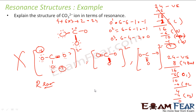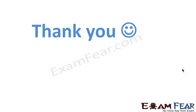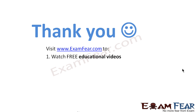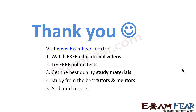None of these individual structures gives the proper shape. The actual structure is the resonance hybrid, with the bond character distributed equally across all three C–O bonds and an overall minus 2 charge. This is the resonance structure of CO3²⁻. Visit examfear.com to watch free educational videos, try free online tests, get the best quality study materials, and study from the best tutors and mentors. Thank you.